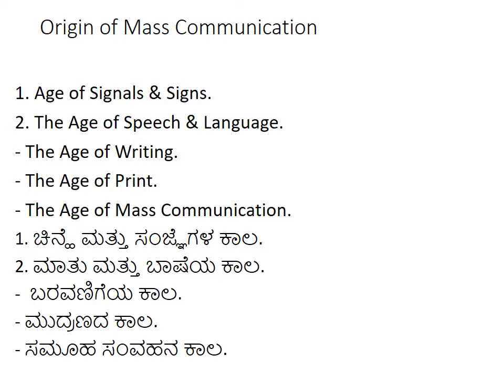The age of writing started with the use of script for language, and then people started spreading information through writing. Then came the age of printing, where we started using printers in different modes. Earlier, the printing machines were very difficult to operate — each and every alphabet had to be arranged manually before sending it for printing.